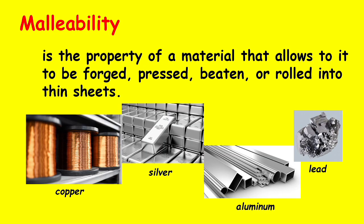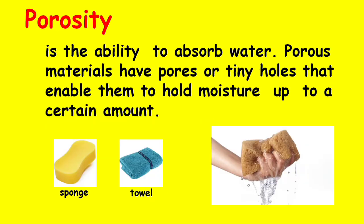Malleability is the property of material that allows it to be forged, pressed, beaten, or rolled into thin sheets. Examples are copper, silver, aluminum, and lead, with pure gold as the most malleable. Porosity is the ability to absorb water. Porous materials have pores or tiny holes that enable them to hold moisture up to a certain amount. Examples are sponge and towel. If you try to squeeze a water-saturated sponge, its pores will constrict to force the water out.